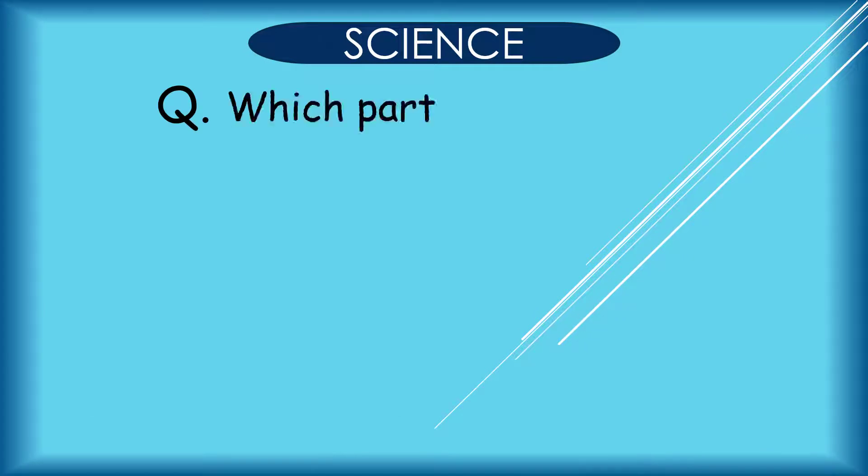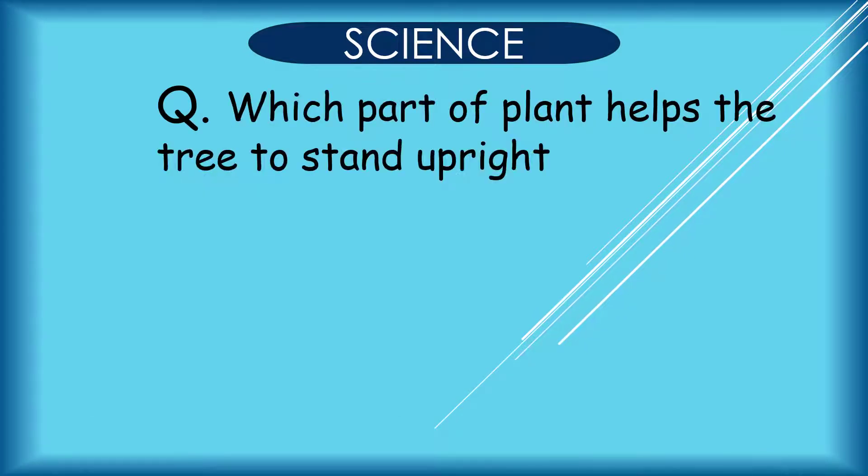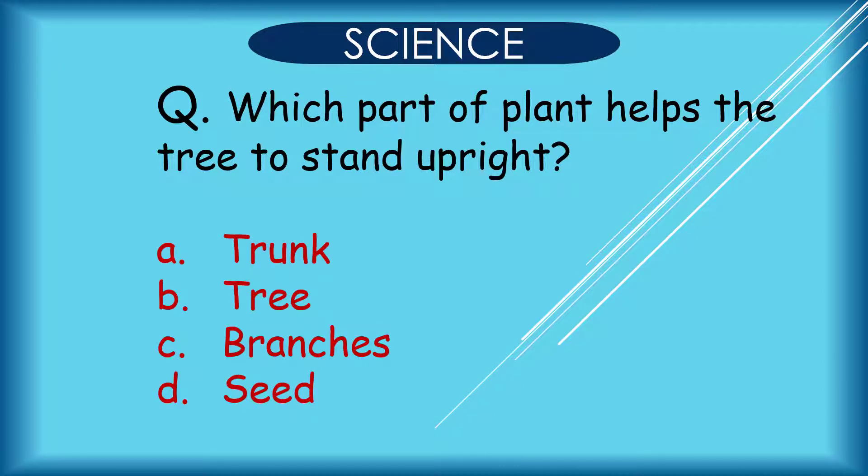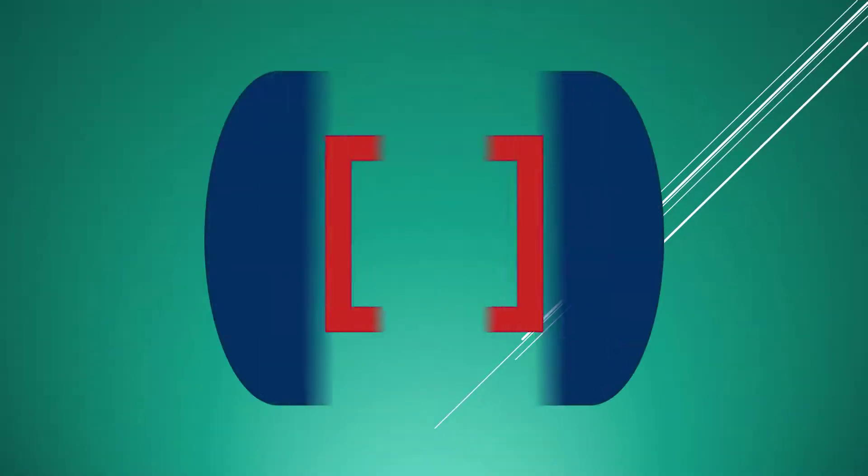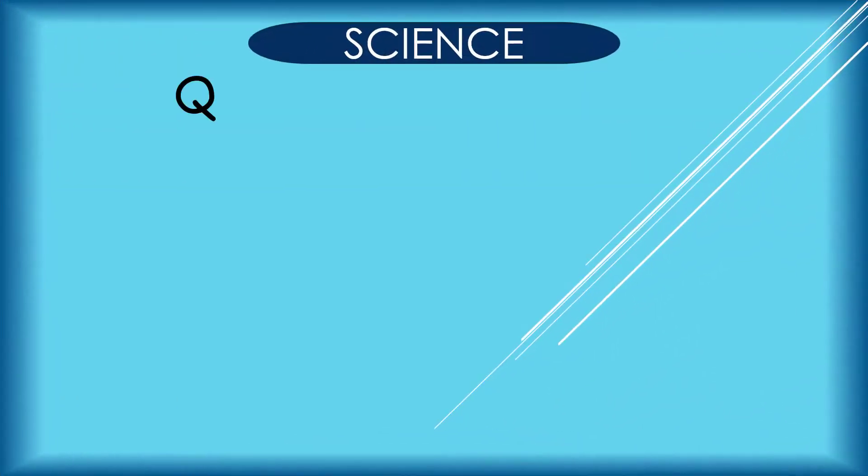Question: Which part of plant helps the tree to stand upright? A. Trunk, B. Tree, C. Branches, D. Seed. Correct answer is A. Trunk.